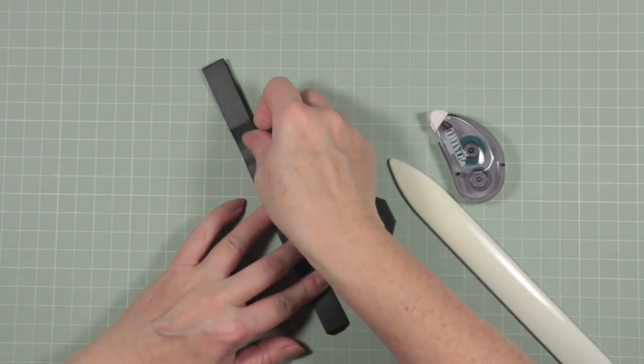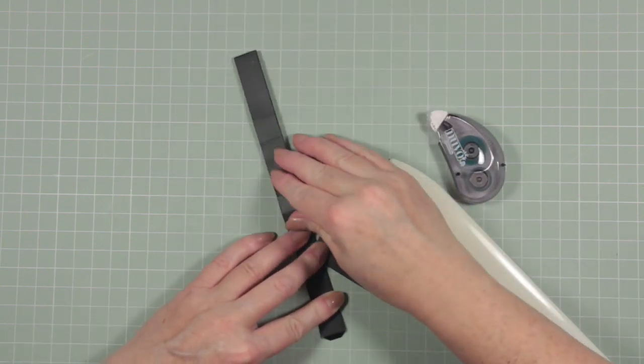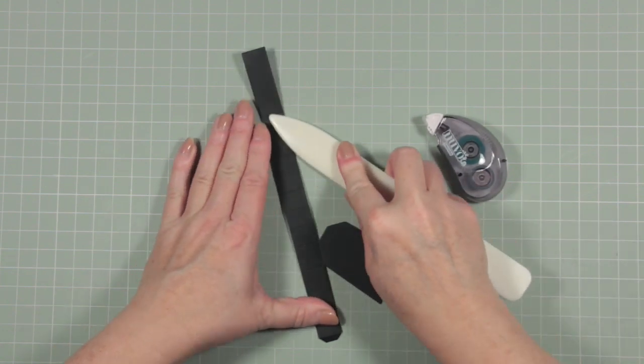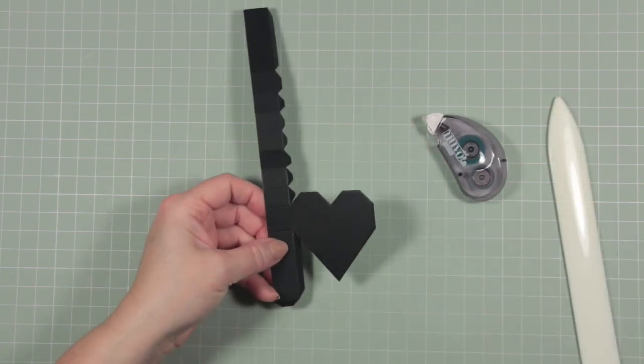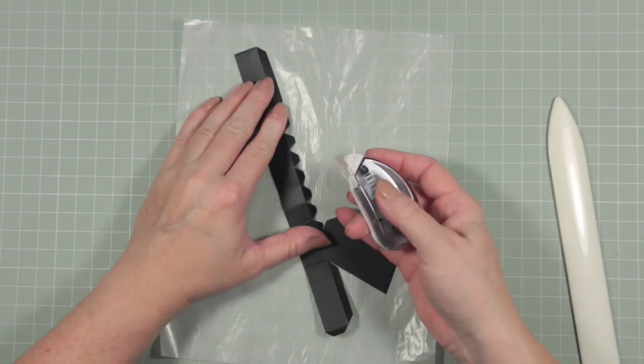Now I'm going to tuck all of the tabs underneath. I'm going to use my bone folder to squash them down really flat so I know I've got a really, really good crease on those. I'm going to use a piece of greaseproof paper underneath to protect my desk while I apply the glue.